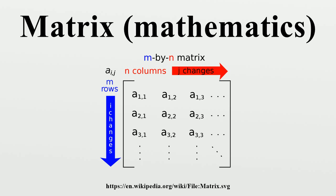A square matrix A that is equal to its transpose, i.e., A^T equals A, is a symmetric matrix. If instead A equals the negative of its transpose, i.e., A^T equals minus A, then A is a skew-symmetric matrix. In complex matrices, symmetry is often replaced by the concept of Hermitian matrices, which satisfy A equals A*, where the star denotes the conjugate transpose of the matrix. By the spectral theorem, real symmetric matrices and complex Hermitian matrices have an eigenbasis, i.e., every vector is expressible as a linear combination of eigenvectors. In both cases, all eigenvalues are real. This theorem can be generalized to infinite dimensional situations related to matrices with infinitely many rows and columns.